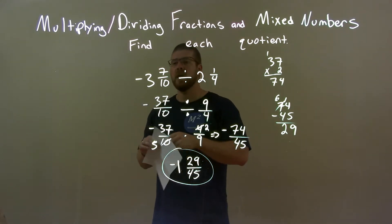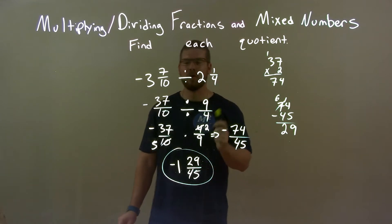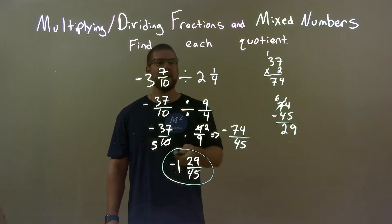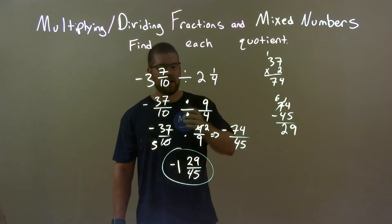So quick recap. We're given negative 3 and 7 tenths divided by 2 and 1 fourth. Well, again, I do not like proper fractions. I only like improper fractions. So I converted them. And I don't like division. I like multiplication. So flip the second number and multiply it.